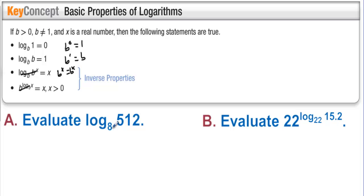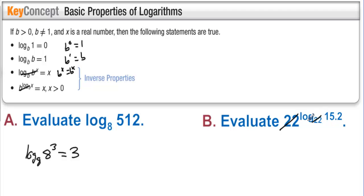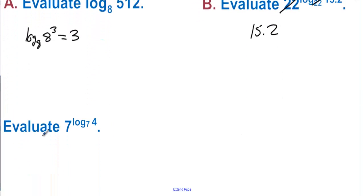Evaluate log base 8 of 512. We can write this as log base 8 of 8 to the 3rd, since 512 is 8 to the 3rd. Since both bases are 8, this evaluates to just 3. On letter b, since both bases are 22, these cancel out and we get 15.2. On the next one, since both bases are 7, this evaluates to 4.